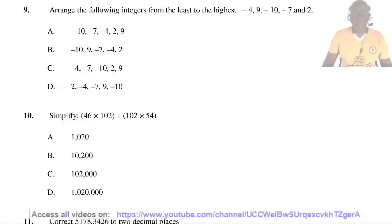Question 9. Arrange the following integers from the least to the highest: -4, 9, -10, -7, and 2. The lowest is -10, followed by -7, followed by -4, followed by 2, and followed by 9. So the answer is A.